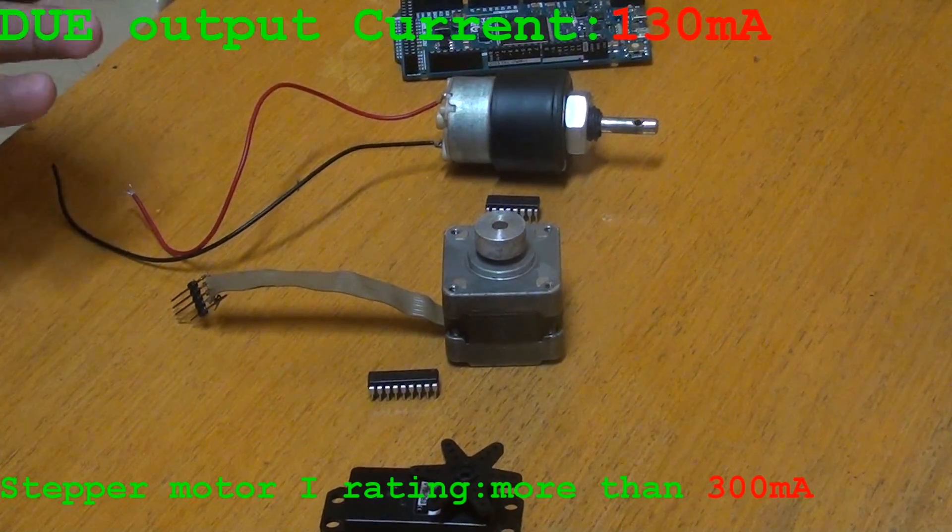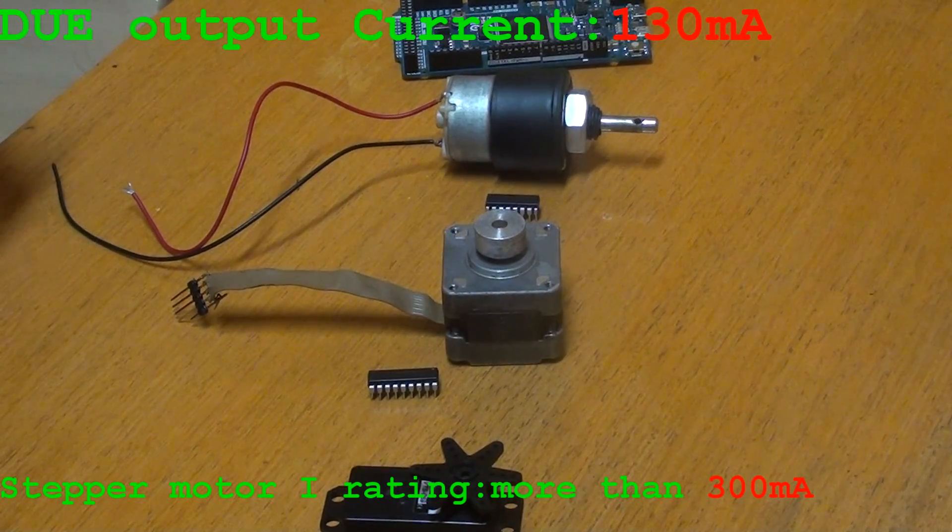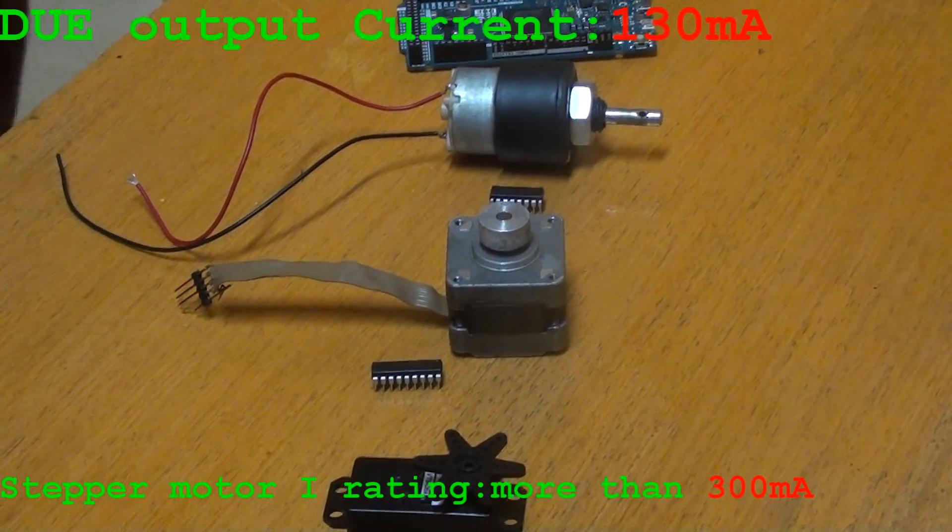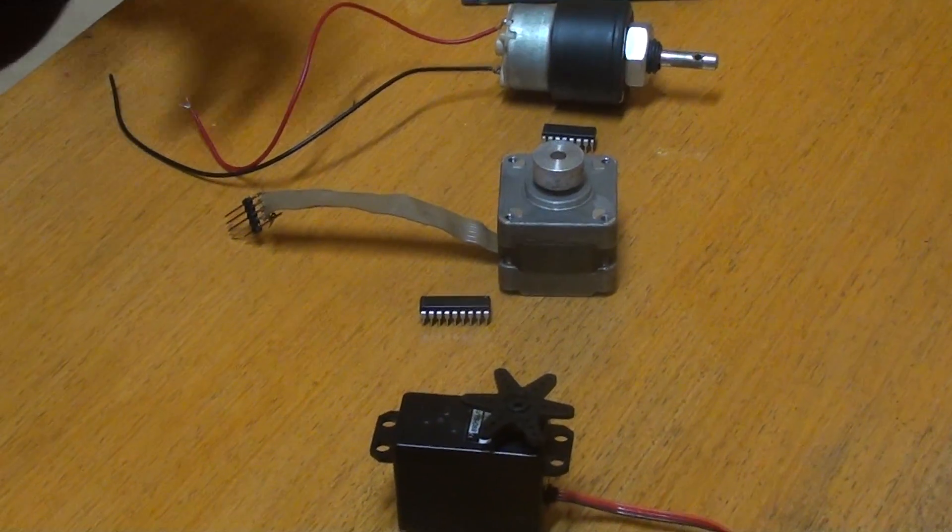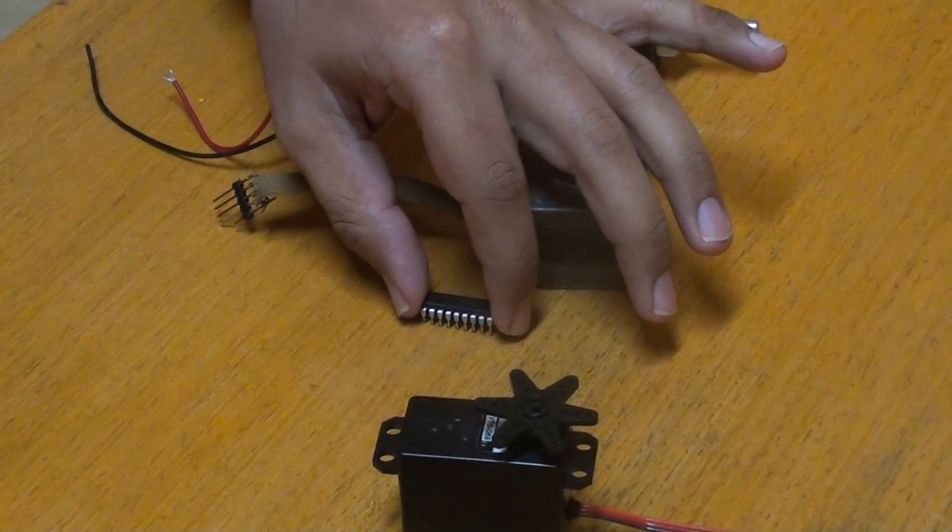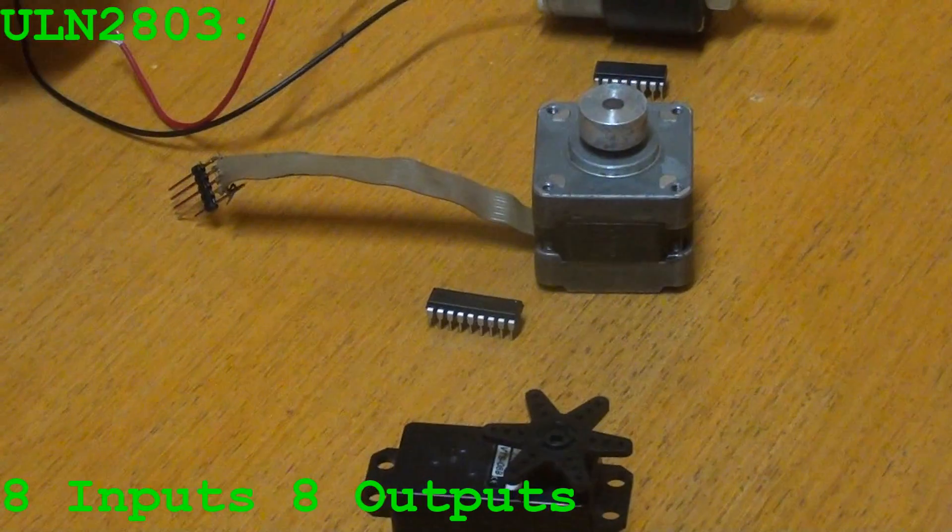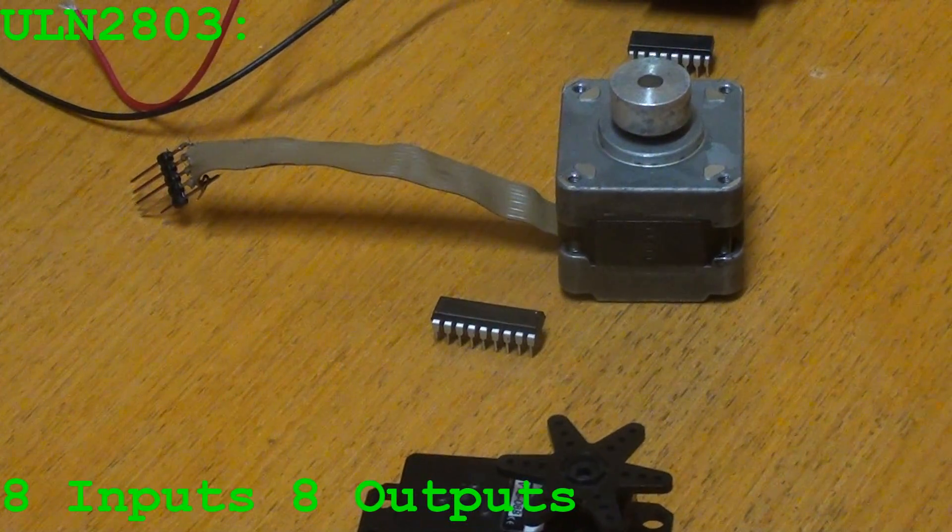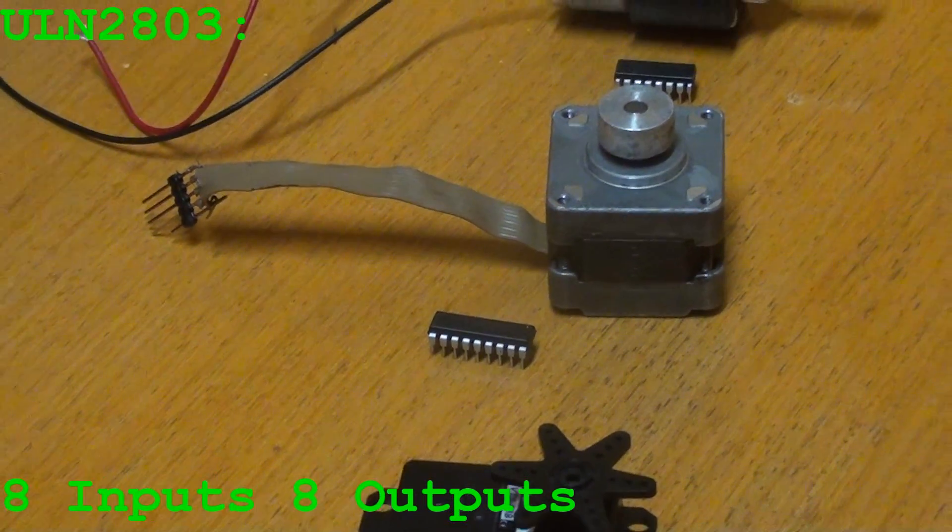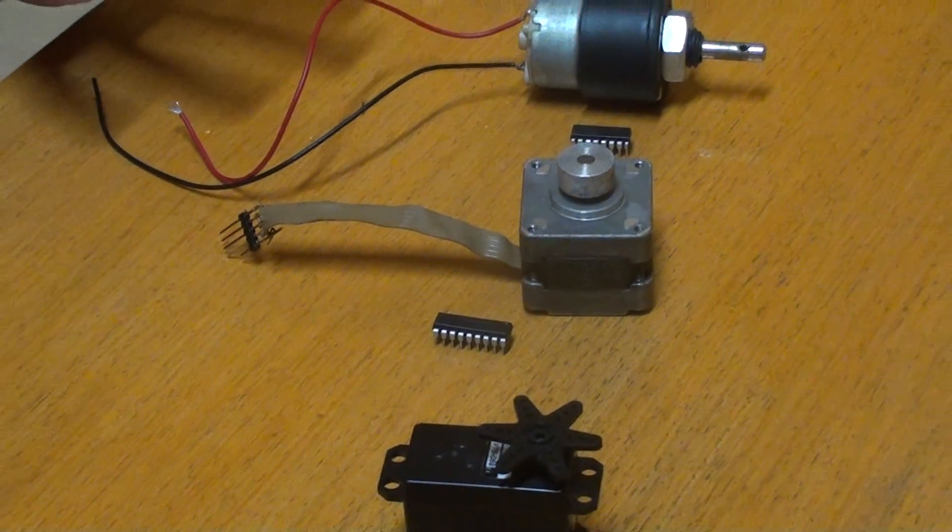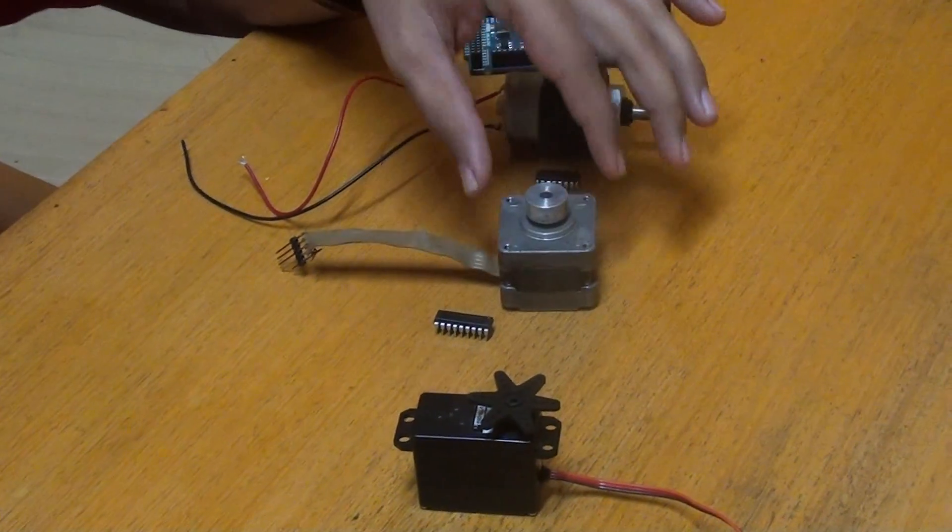To overcome this drawback, we will be using an IC called ULN 2803, which provides a current rating of 500 milliamps. This saves the board from being damaged and enhances the power required for the stepper motor, which the Arduino Doom is not able to provide individually.